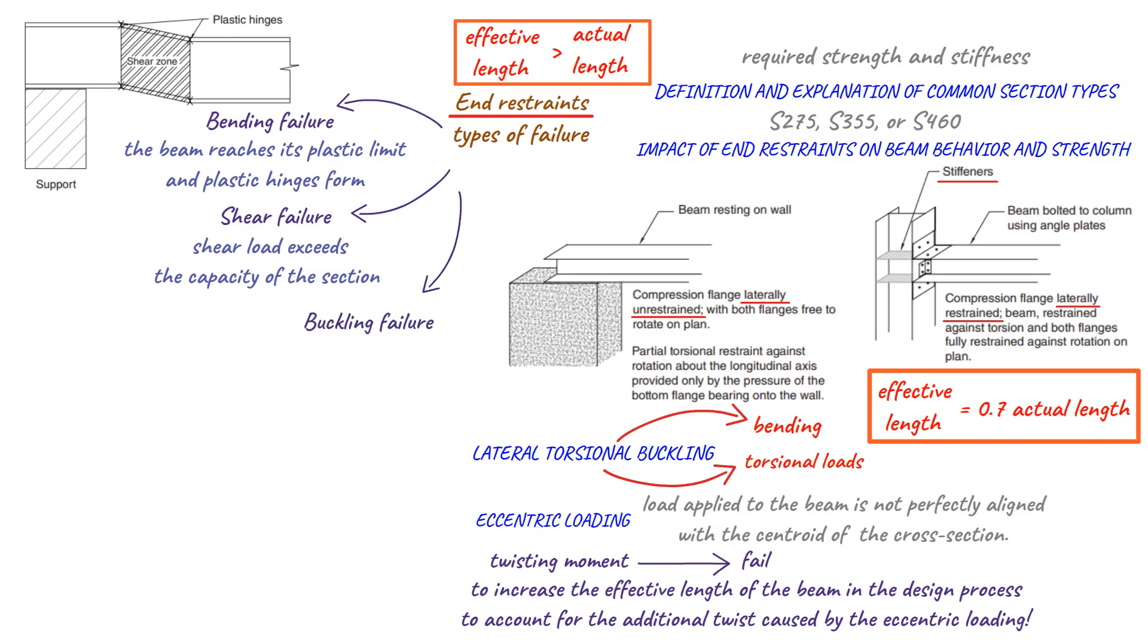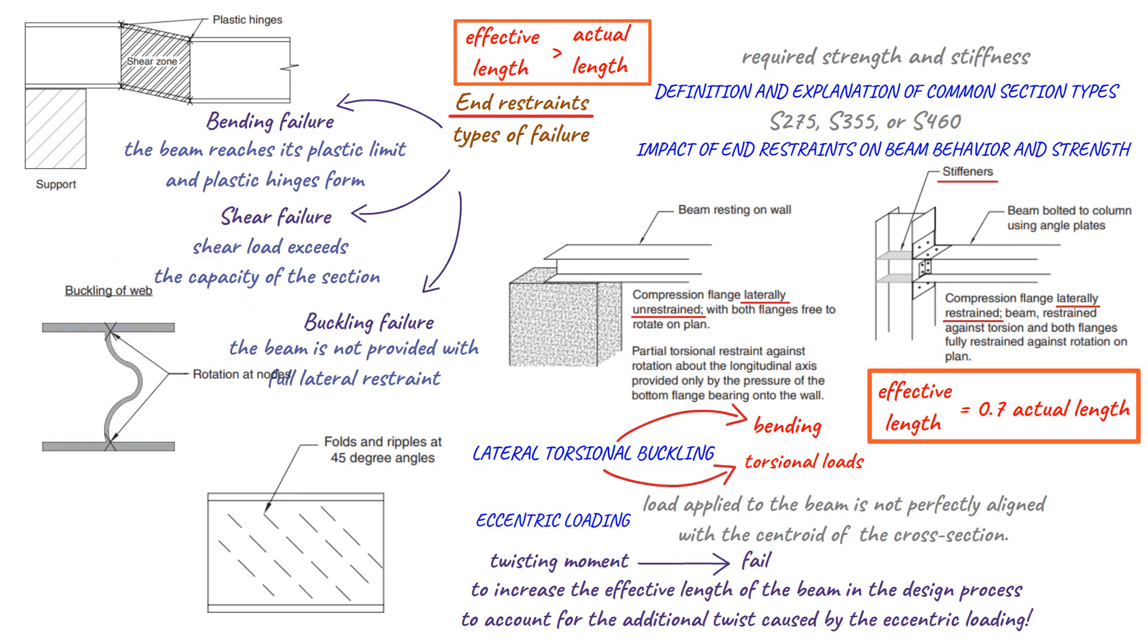Buckling failure can occur if the beam is not provided with full lateral restraint, such as a concrete floor, and can be characterized by folds or ripples at a 45 degree angle to the web. It is crucial to consider these types of failure in order to ensure the structural integrity of the beam and prevent potential accidents or failures.